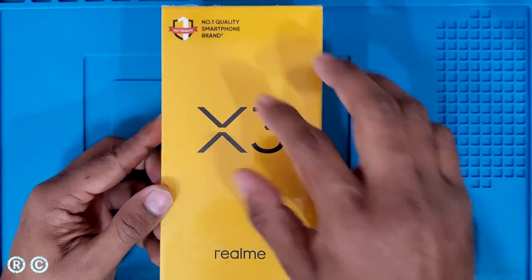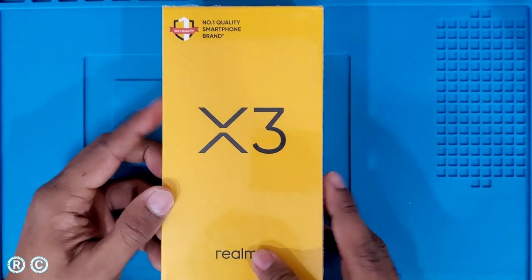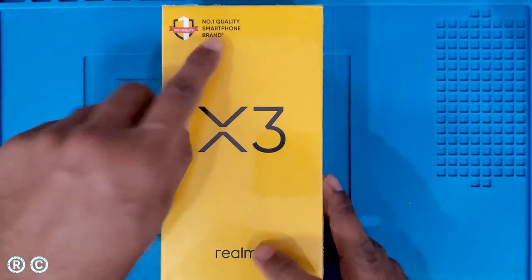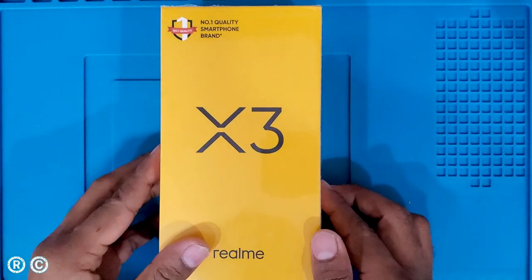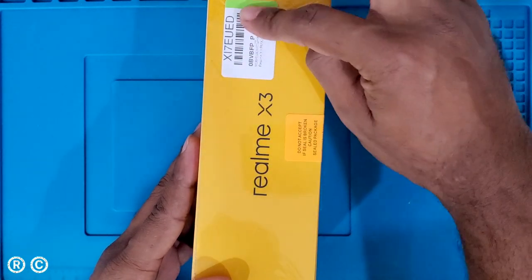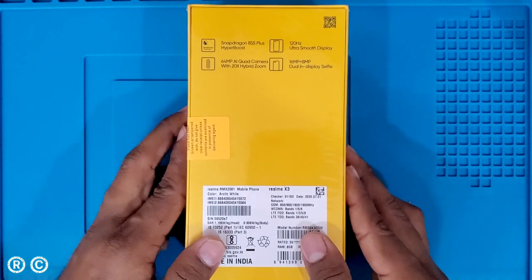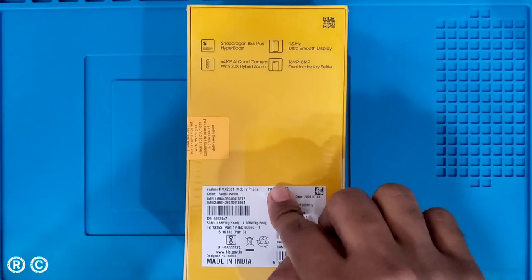First of all, on the box we have the Realme logo and branding here. This is from the number one smartphone company, a quality smartphone brand. On the back, there are specs and other details.